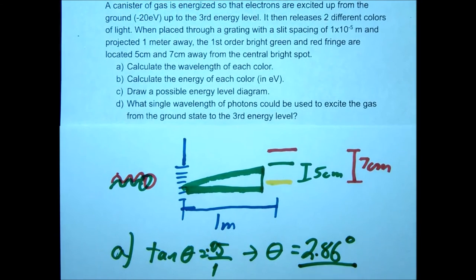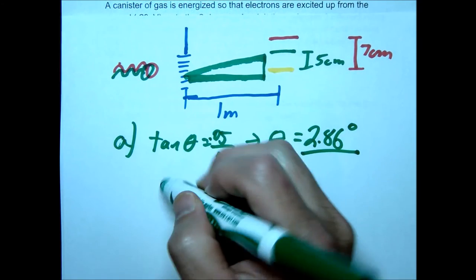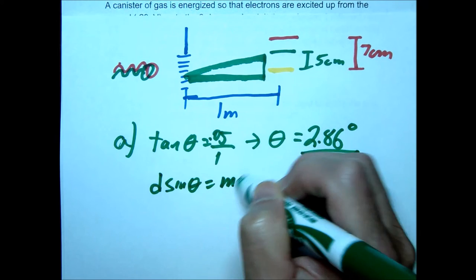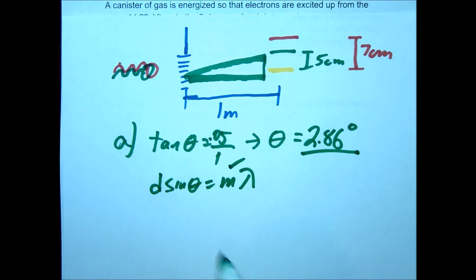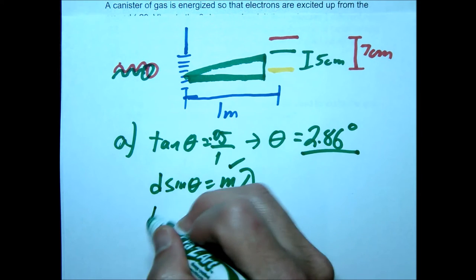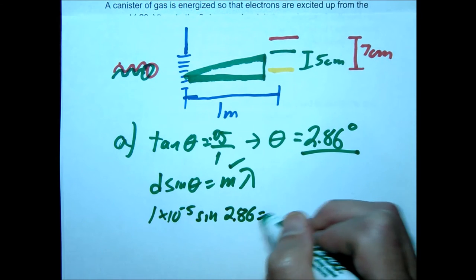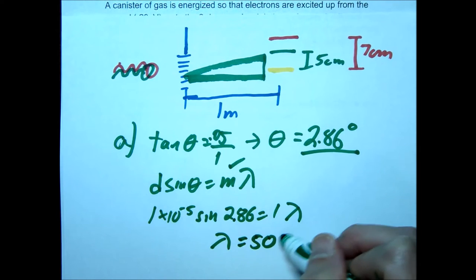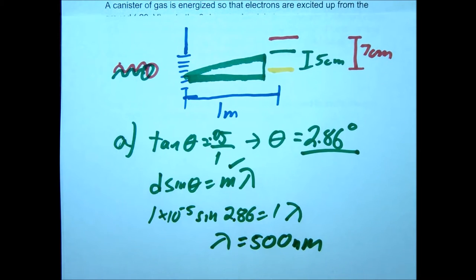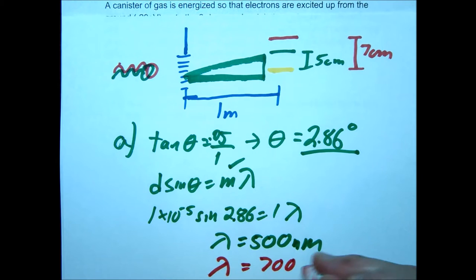For the red, I'll use the approximation. We use d sin theta equals m lambda. This is the first order. D was given as 1 times 10 to the negative 5th. So 1 times 10 to the negative 5th times sine of 2.86 equals lambda. Solving for lambda, we get 500 nanometers. Repeat for red, and you should get 700 nanometers.